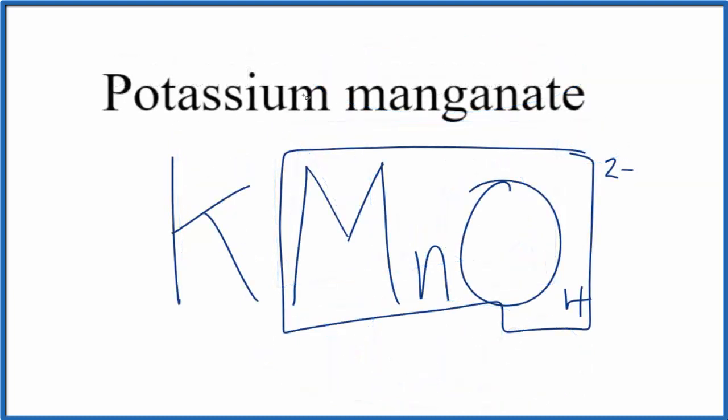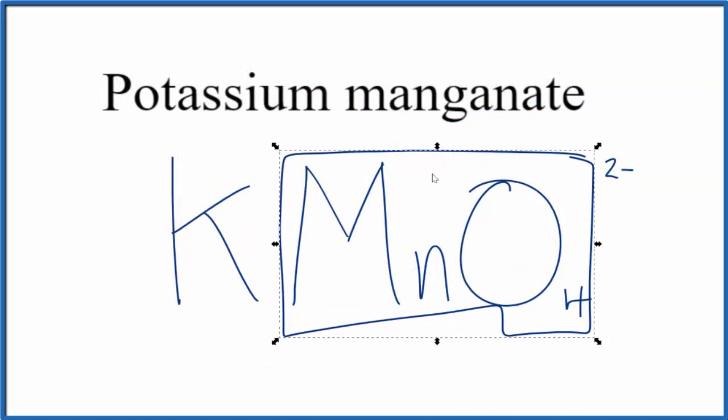Since we have potassium, which is a metal, and then our polyatomic ion, which is a group of nonmetals, we have an ionic compound, so the charge needs to add up to 0. We need to have a net charge of 0 for the whole compound.